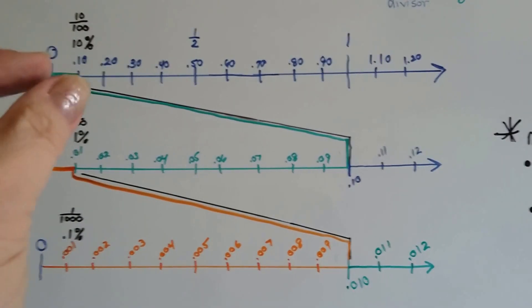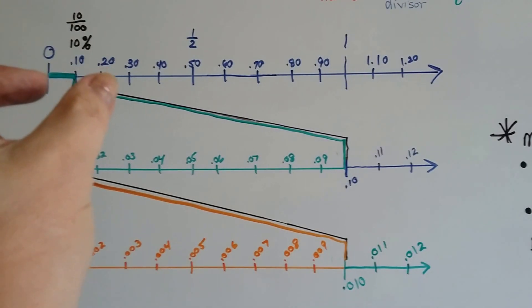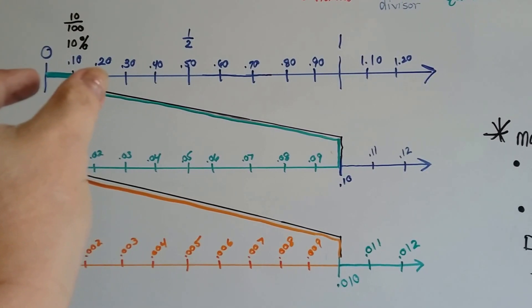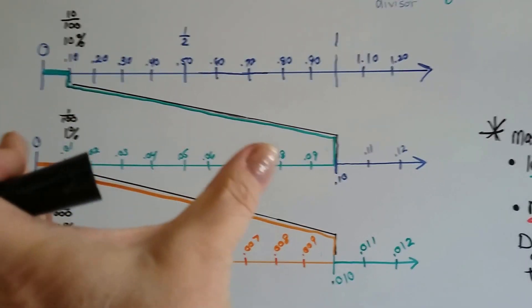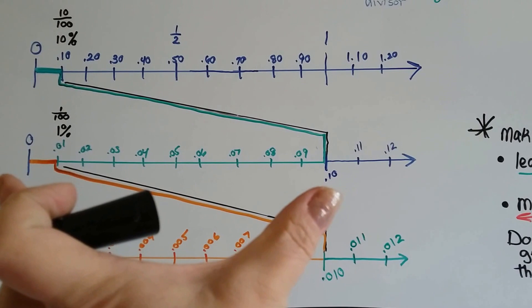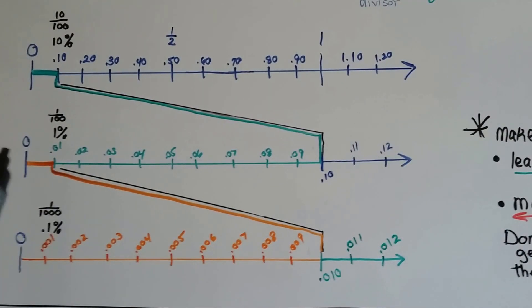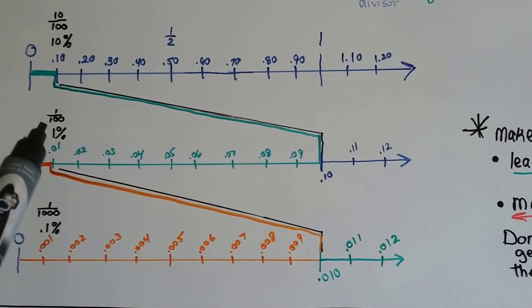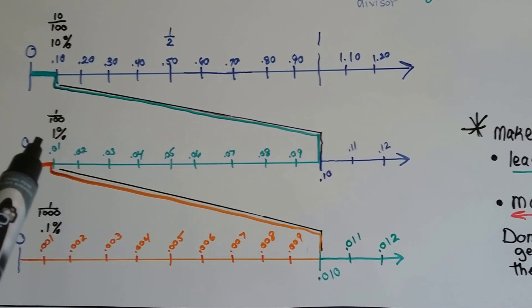Then, if you look inside this little green portion right here, this is from 0 to 10 percent. It's like we took a microscope and magnifying glass and opened it up to see what's inside of there. And what we've got is we went from tenths to hundredths.